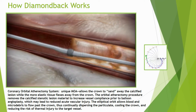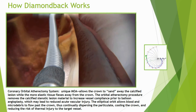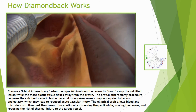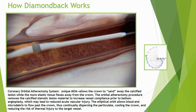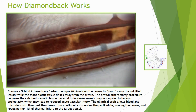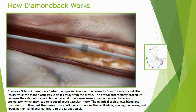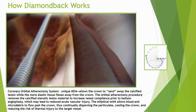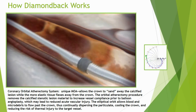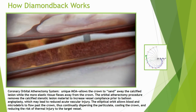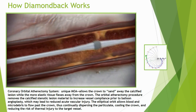In our analysis, we used the Diamondback coronary orbital atherectomy system. The Diamondback is unique in that it is a bladeless system which consists of a crown used to sand away calcified lesions while the more elastic tissue flexes away. Orbital atherectomy procedures remove calcified lesion material to increase vessel compliance, which may lead to reduced acute vascular injury. The Diamondback system allows blood and micro-debris to flow past the crown, continually dispersing particulate, cooling the crown, and reducing the risk of thermal injury to the target vessel.